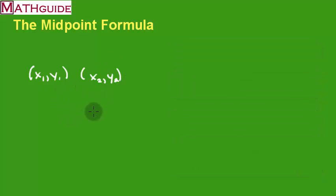If we're given two endpoints, and we want to find the midpoint of the segment, we're going to use a formula. So, the midpoint formula says that you're going to add the x values, divided by two. We add the y values and divide by two.